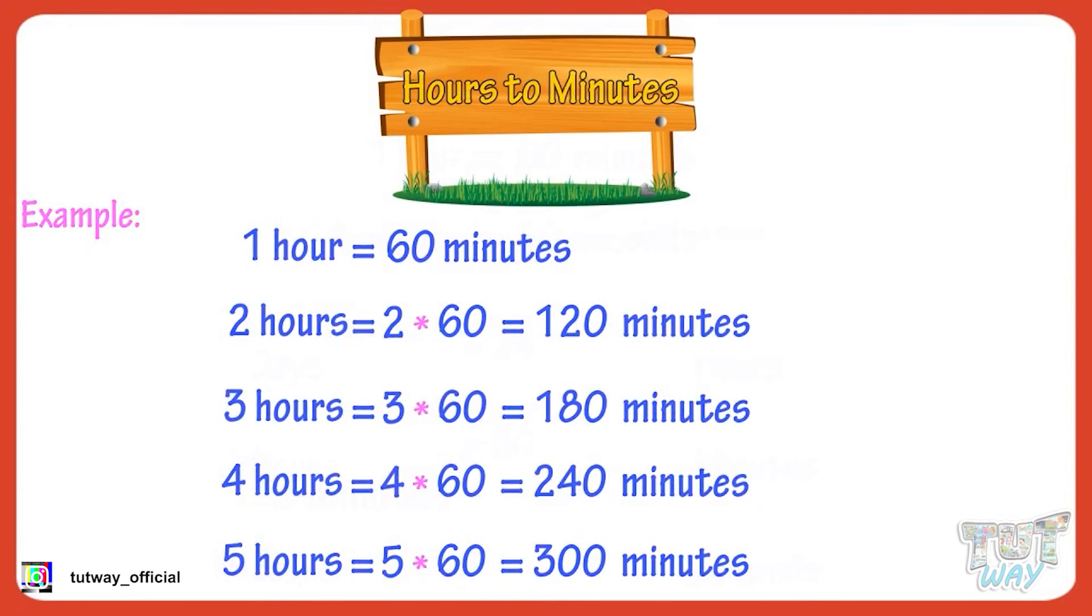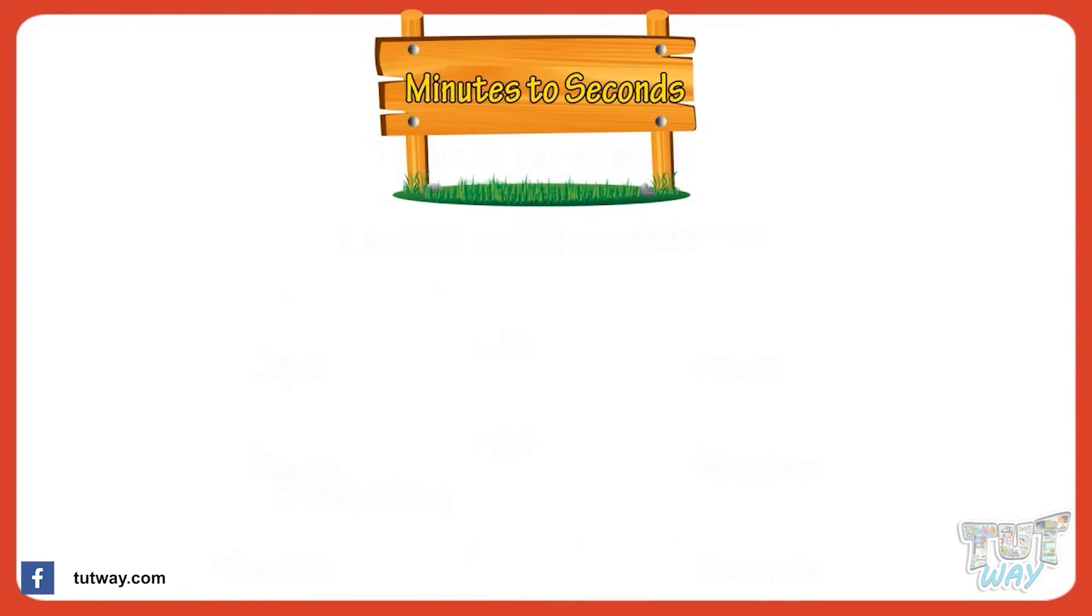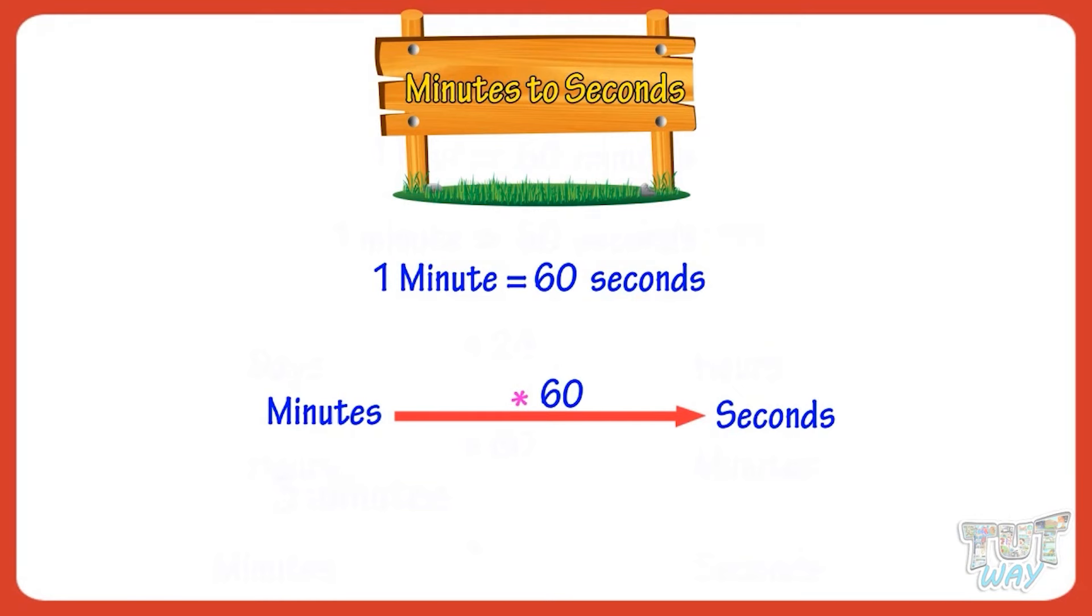Now let's learn converting minutes to seconds. There are 60 seconds in a minute. So to convert minutes to seconds, we need to multiply minutes with 60.